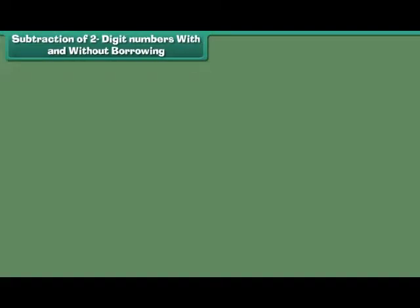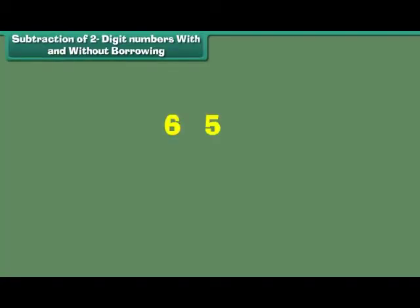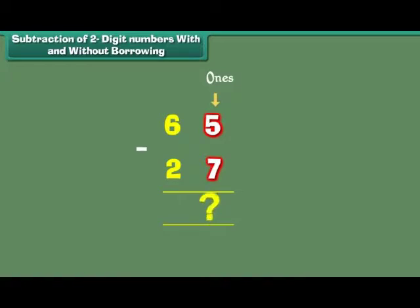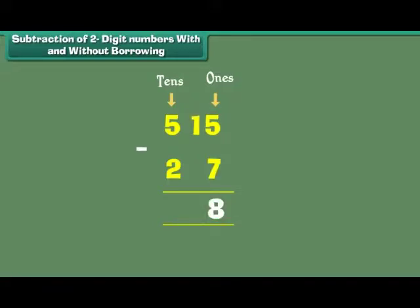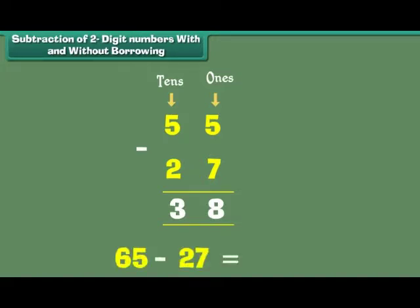Subtraction of 2-digit numbers with borrowing. Let us now subtract 2-digit numbers using the technique of borrowing. What is 65 minus 27? Since 5 is less than 7, it borrows 1 from the digit at the 10s place to make itself 15, which is larger than 7. 15 minus 7 is equal to 8. Since the 6 at the 10s place lent 1 to the 5 at the 1s place, it becomes 5. 5 minus 2 is equal to 3. Therefore, 65 minus 27 is equal to 38.